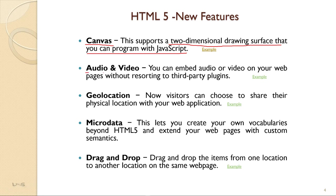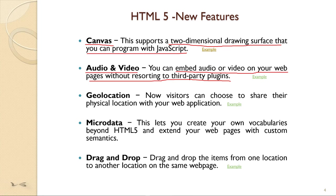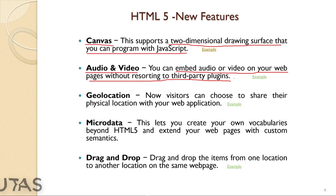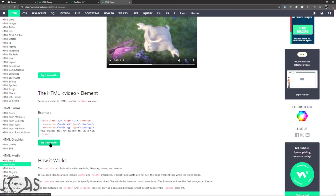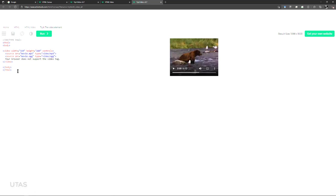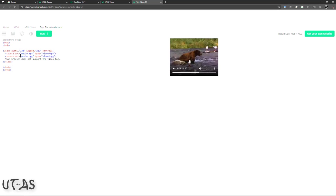Audio and video: you can embed audio and video on your web pages without resorting to third-party plugins. No need to use any other code or third-party plugins to insert your video or audio. The new video element is used with attributes such as height, and a source element to indicate the filename of the video clip and its type, along with a message to the user.